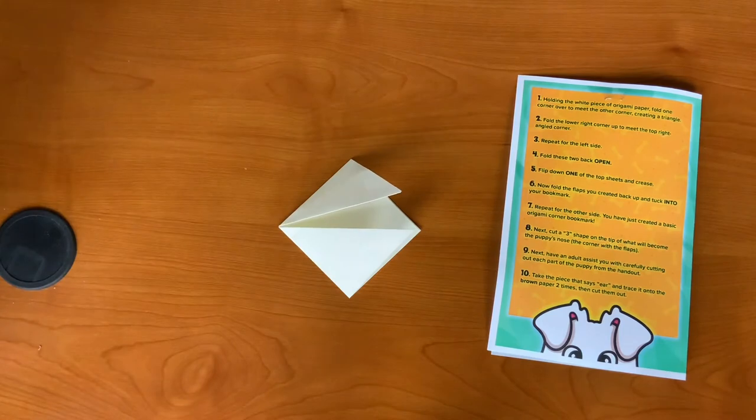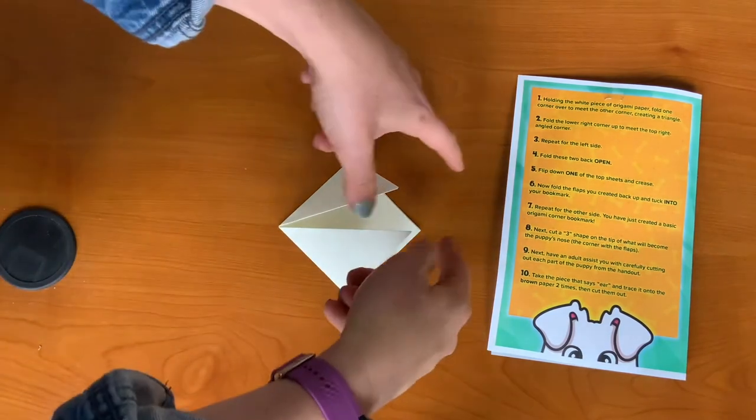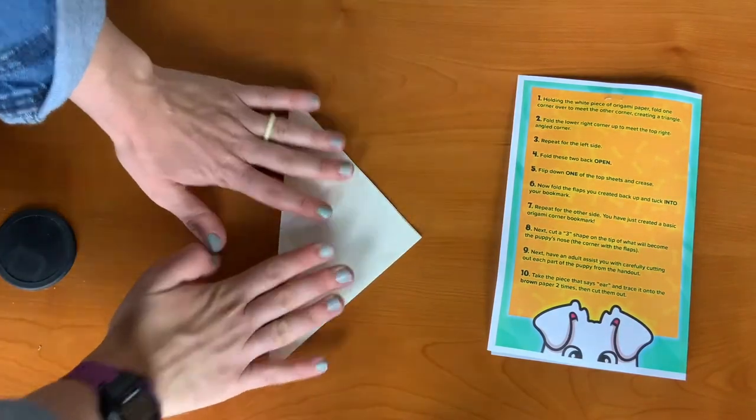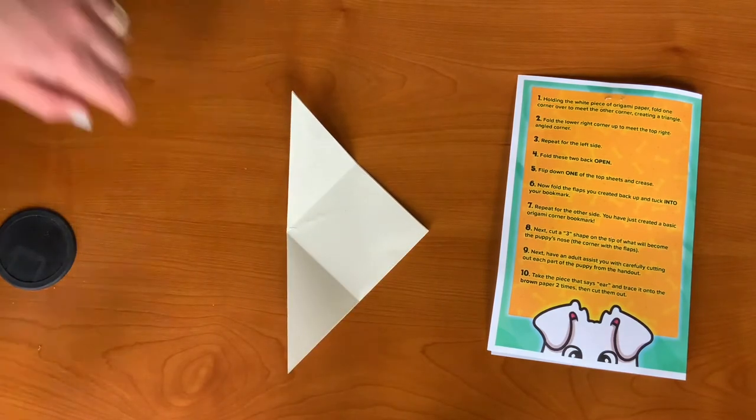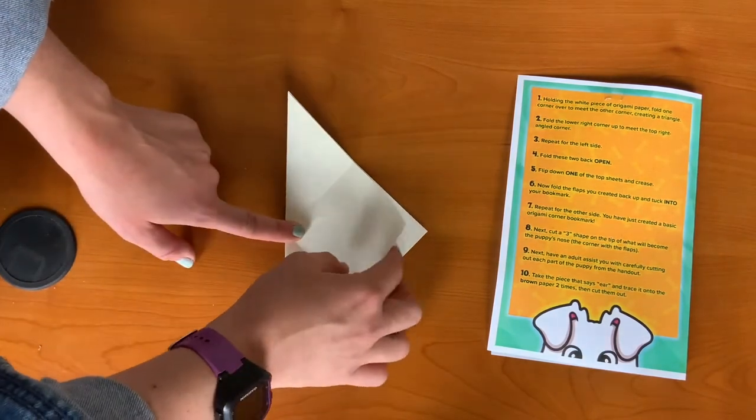Step four, fold these two back open. Step five, flip down one of the top sheets and crease.